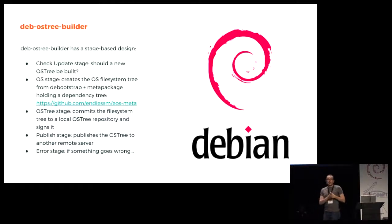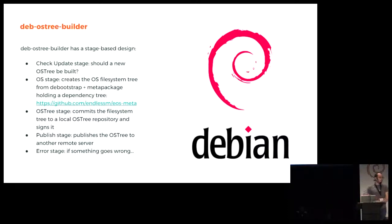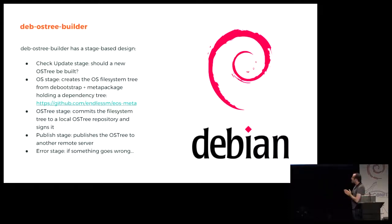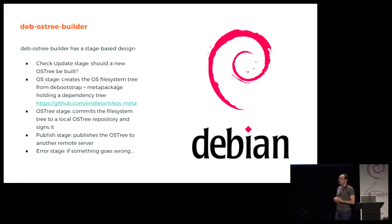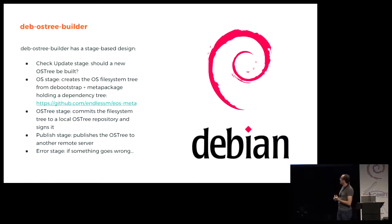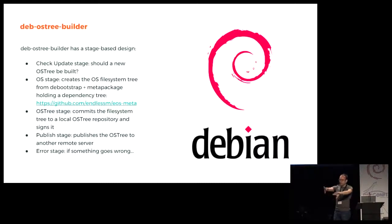So, dev-ostree-builder — what does it do? It's designed in stages, mostly four stages you need to do to deploy the system. The first one is a check for updates: should a new OSTree be built given the set of packages you are giving it right now? If so — the first time it will be yes for sure — there's the OS stage, which creates using debootstrap, taking a meta package which is simply a list of dependencies that should go in the filesystem, deploying everything into a temporary directory.